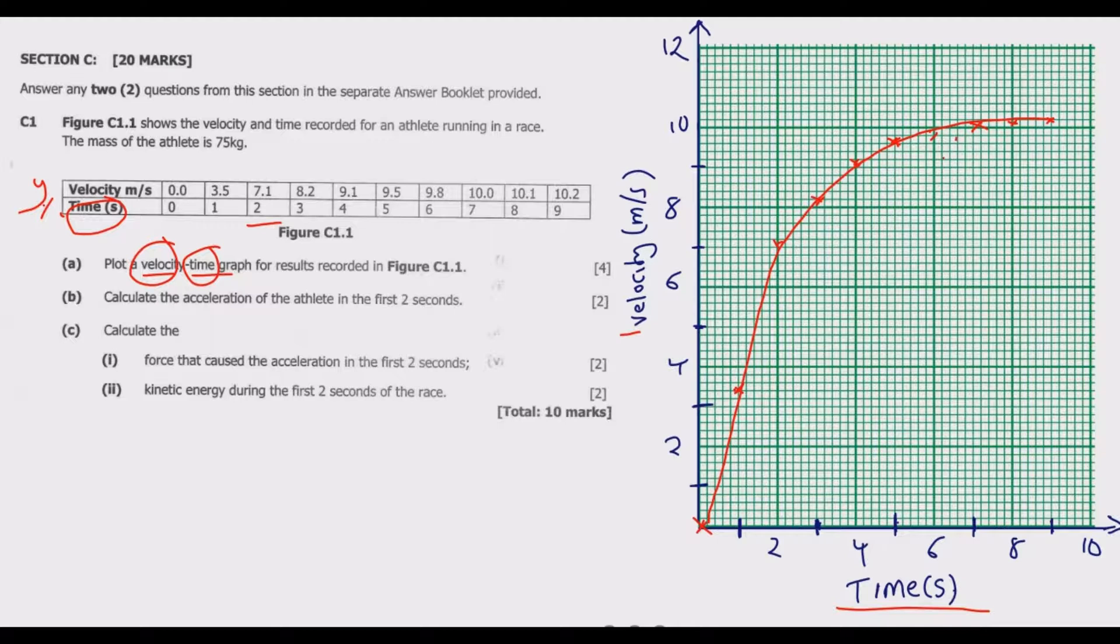Question B: calculate the acceleration of the athlete in the first two seconds. So I'll define acceleration. Acceleration is given by final velocity minus initial velocity over final time minus initial time. Now what you notice in this case, in the first one second the change in time is one second because it will be one minus zero which will be one, then the change here will be 3.5 minus zero which will be 3.5. So this change, when we use this, we are going to get 3.5 over 1 which will give me 3.5 meters per second squared.